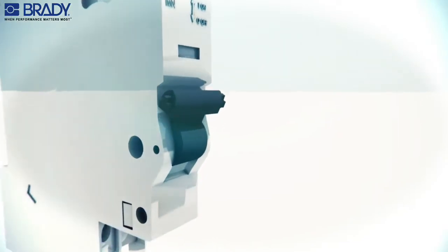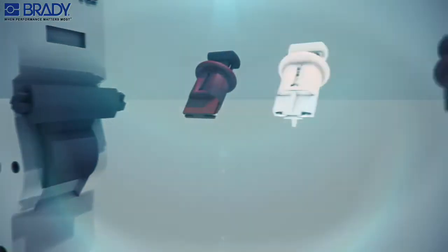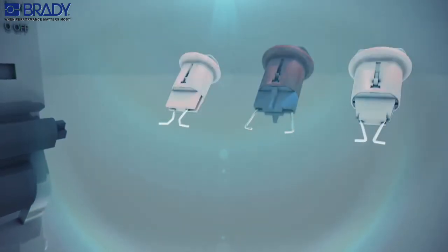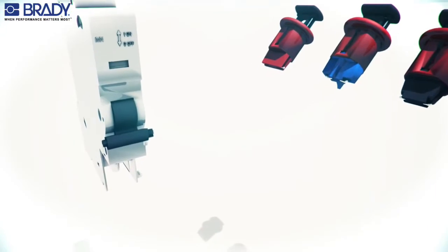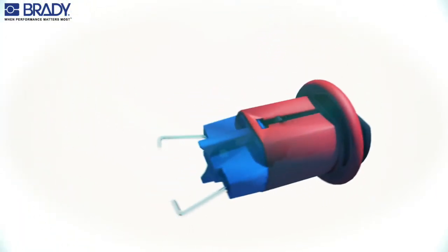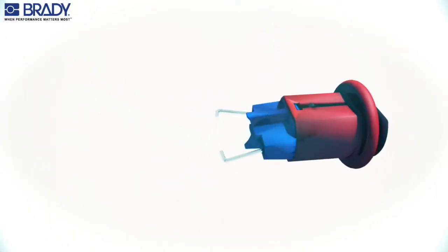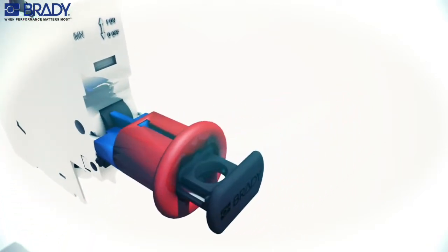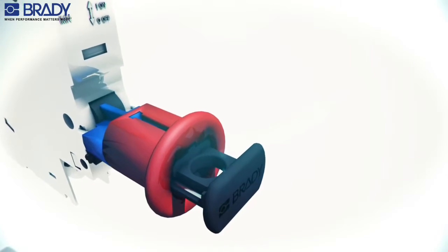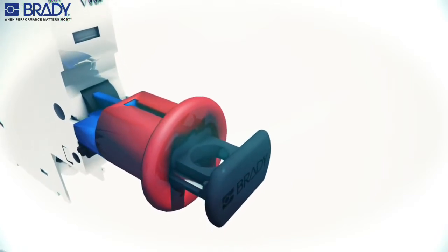Locate the small holes in the center of the circuit breaker casing. Select the appropriate pin-in or pin-out circuit breaker device. Place the circuit breaker in the off position. Press the lockout device push button to disengage the pins. Position the pins into the small holes of the casing by releasing the push button.